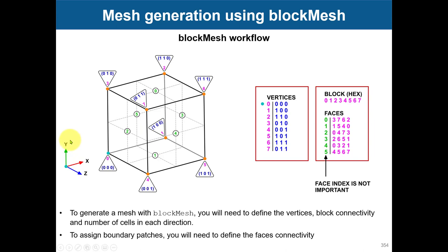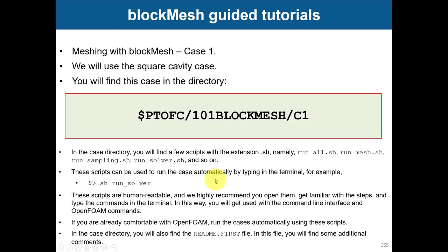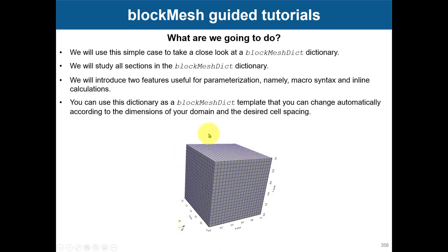My advice is to just use this reference system. This is for me a parametrical file — I always leave it like this. The only thing I need to do is change the coordinates and I have my mesh. So let's go to this directory and open the dictionary to see what is going on. This is the single block that we're going to create.